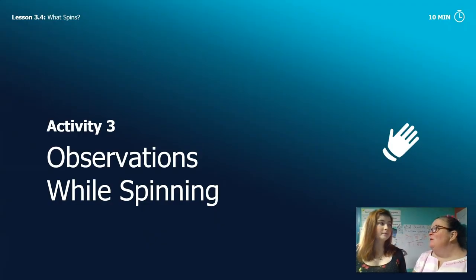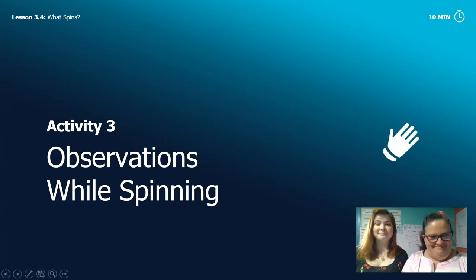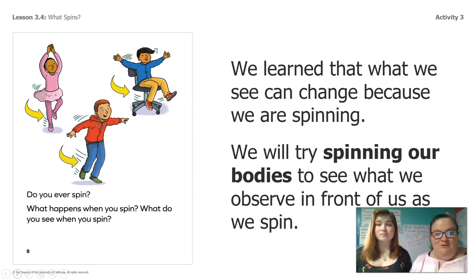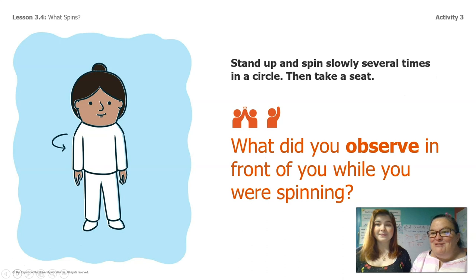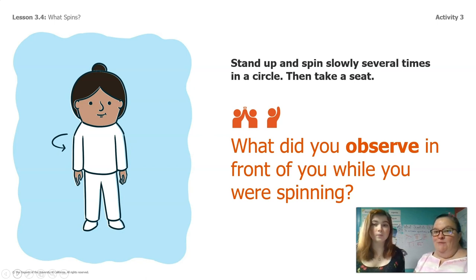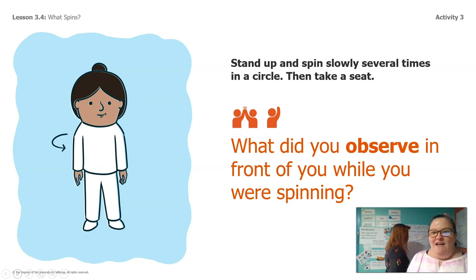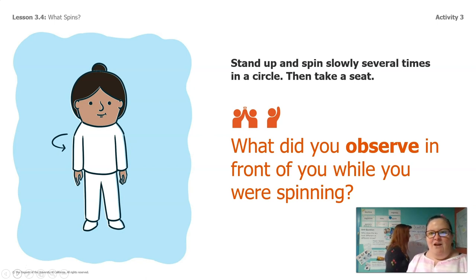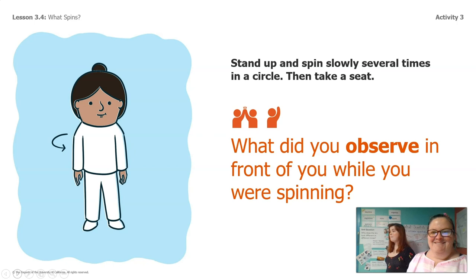Rosie, do you mind staying and helping us make some observations while spinning? Sure. Let's get started. We learned that what we can see can change because we're spinning. So we're going to try spinning our bodies to see what we observe in front of us while we spin. I want you guys to go ahead and stand up and spin around slowly. Rosie's going to show you how to spin slowly in a circle a couple times. Pay close attention to what you observe in front of you while you're spinning. What do you observe in front of you while you're spinning? Thanks everybody, thanks Rosie.